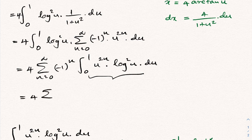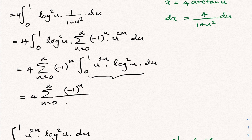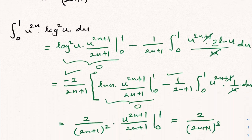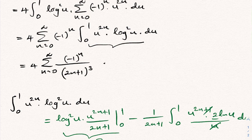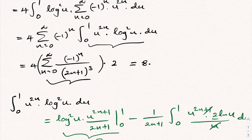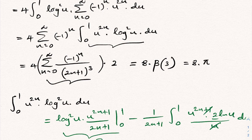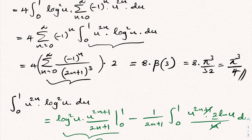Plugging 2/(2n+1)³ back into our expression, we have 4 times the sum from n = 0 to infinity of (-1)ⁿ/(2n+1)³, multiplied by 2, giving 8 times that sum. This is the well-known Dirichlet beta function β(3). We know β(3) = π³/32, so the final answer simplifies to 8·(π³/32) = π³/4. Please subscribe to the channel if you enjoy this type of video, thank you for watching.